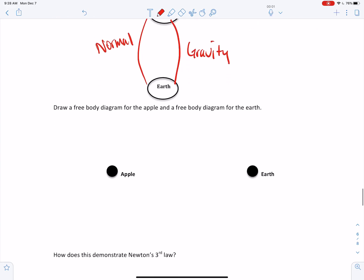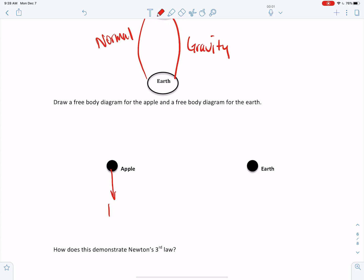Draw a free body diagram now. So the apple is still being pulled down by the force of gravity from the earth. But the apple is also being supported upwards by a normal force from the earth. So the earth is applying two forces to the apple.